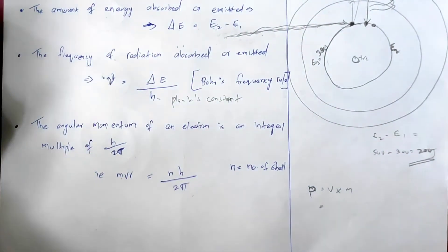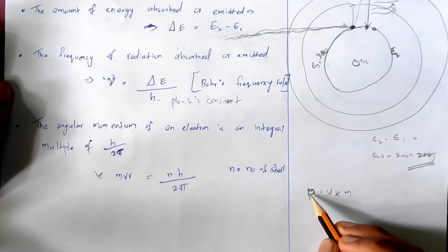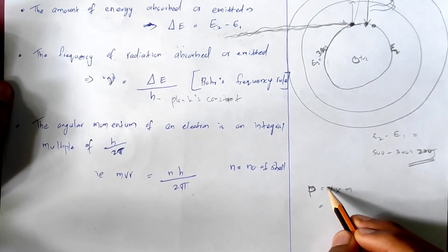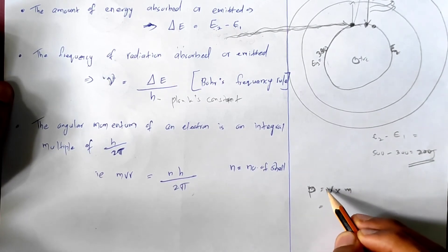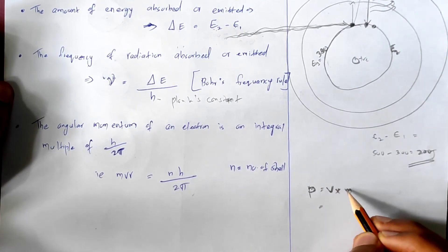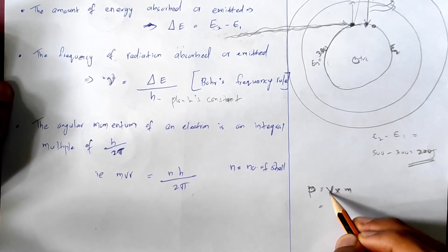Momentum p is equal to mass m multiplied by velocity v.